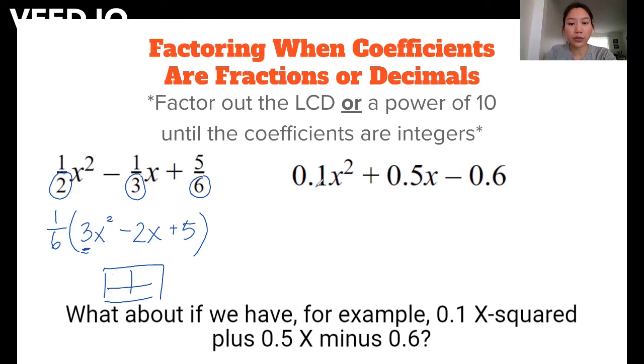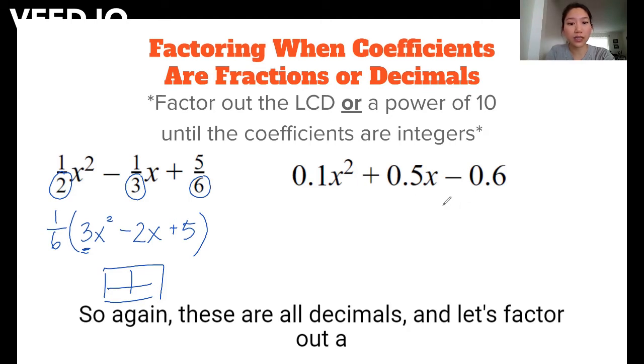What about if we have, for example, 0.1x² + 0.5x - 0.6? So again, these are all decimals.